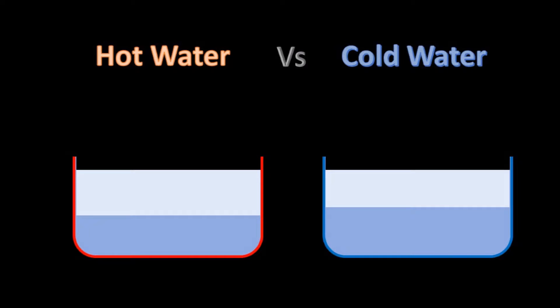So there was 228 grams of water in each container. 147 was left in the hot and 153 was left in the cold. So you would expect that 81 grams of ice formed in the hot container and 75 grams in the cold, right?